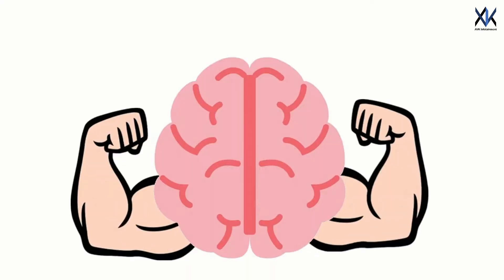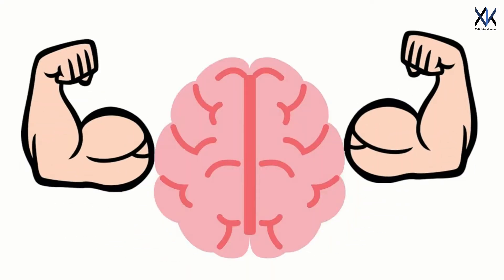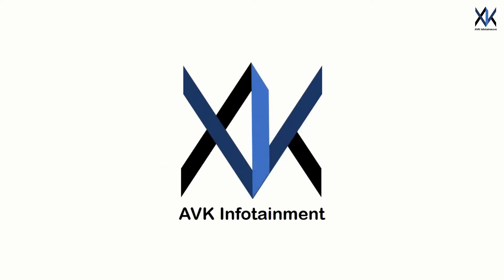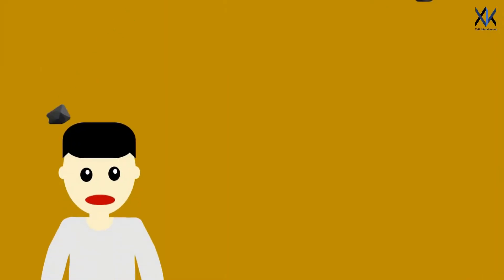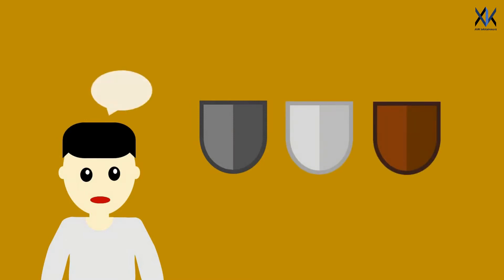And now get ready to flex your brain muscles because we are going to get started. Now suppose that you are at a situation wherein you have to protect yourself. You are provided with a choice of a metal shield, plastic shield, and wooden shield. Given that all the shields are not that heavy to lift, what will you choose?